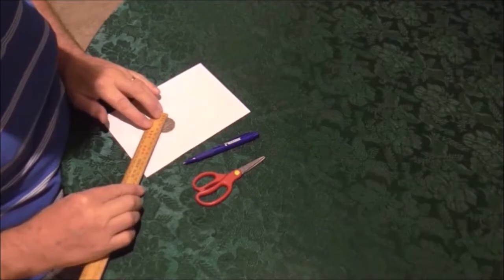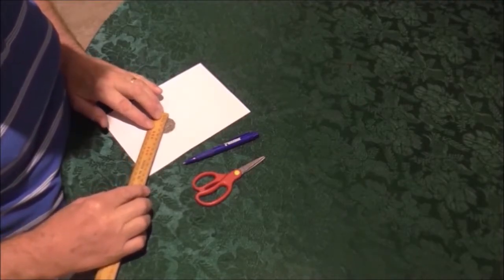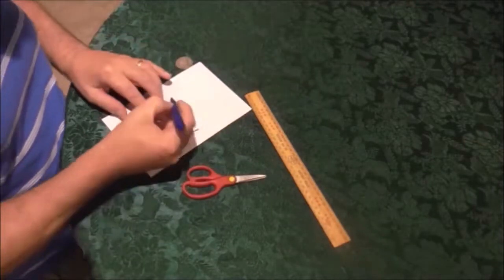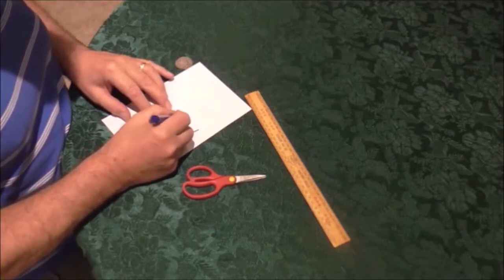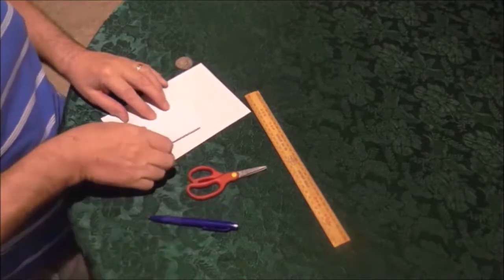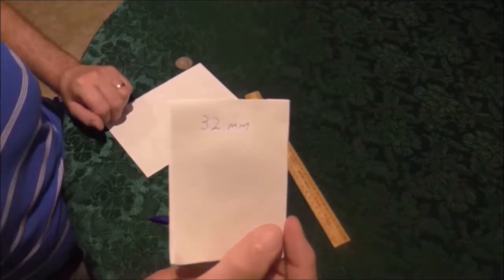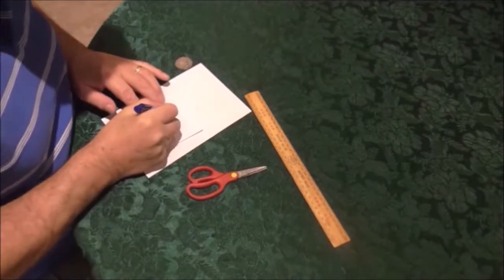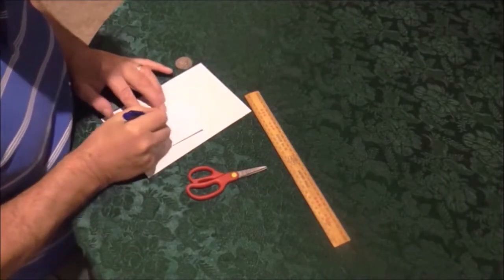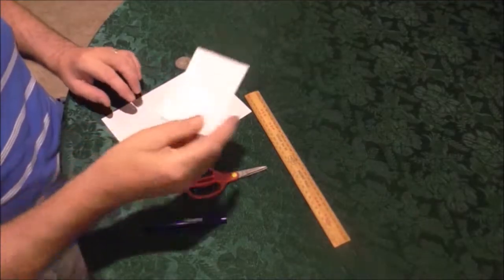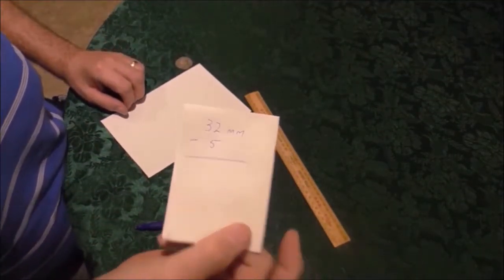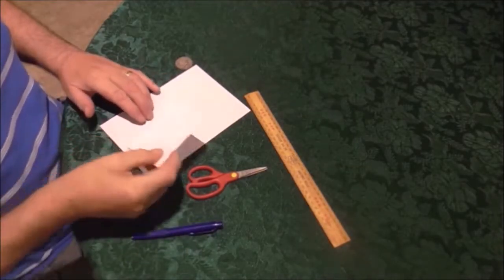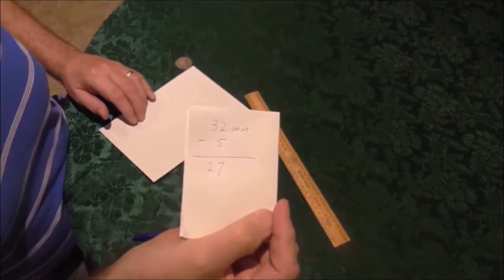You measure across the coin at the widest point. Most coins of course will be round, but this one's got edges. So at the widest point, this coin is 32 millimetres across. But we want the hole to be smaller than the coin. So whatever the coin measures across, you subtract 5 millimetres from it. So it's 32 millimetres across and you're going to subtract 5 which comes to 27 millimetres. So that's what you want the hole size to be.